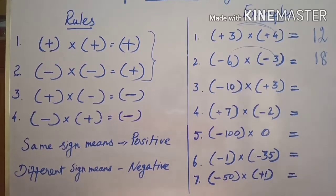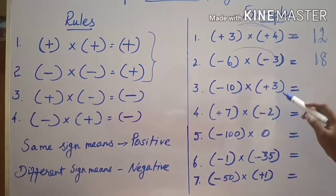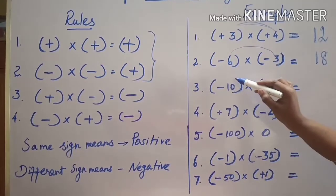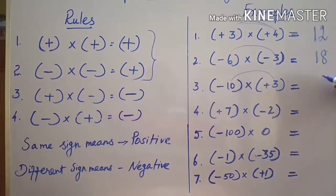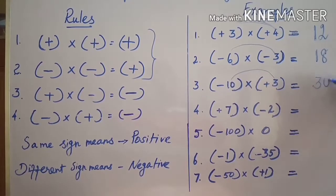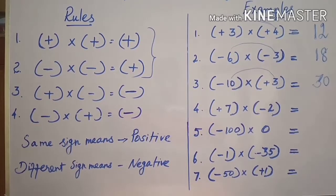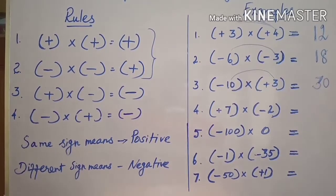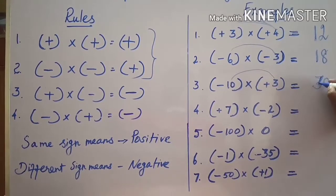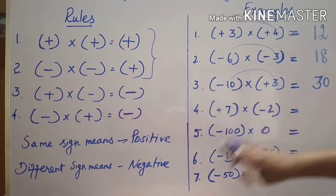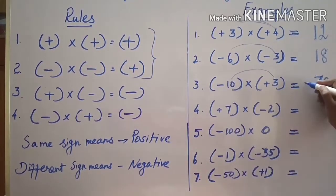Third sum: we have two numbers, one is negative and another one is positive. Multiply the numbers: ten into three is thirty. Look at the sign — one is positive and another one is negative. Signs are different, so the answer will be negative. Put negative — it's very simple.